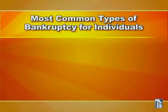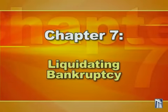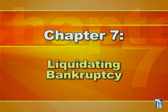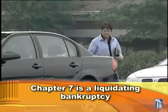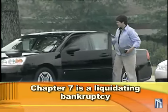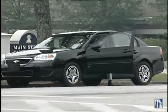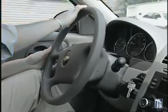The most common types of cases for individuals are Chapter 7 and Chapter 13. A Chapter 7 is a liquidating bankruptcy. In return for having debts discharged — meaning the debtor is no longer legally obligated to pay them — the debtor must turn over certain property to the Chapter 7 bankruptcy trustee. The law allows the debtor to keep some property as exempt so the debtor can make a fresh start.